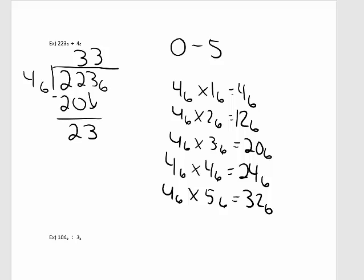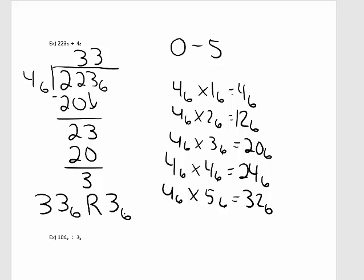3 base 6 times 4 base 6 is again 20 base 6. Subtract, that's 3. 4 does not divide into 3, so this 3 is the remainder. So I write it as 33 base 6 with a remainder of 3 base 6.